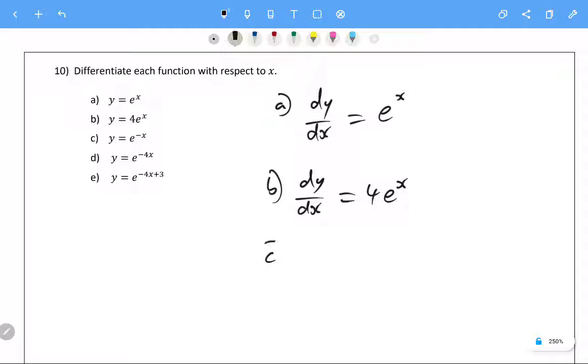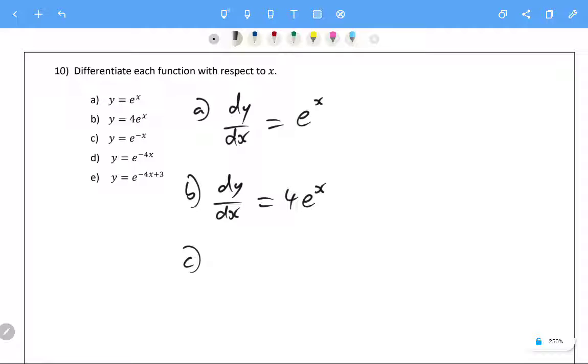Alrighty, c is a chain rule question. The reason it's a chain rule is that we're not actually deriving e to the x, we're actually deriving e to the negative x. The derivative of e to the negative x is e to the negative x, but we have to multiply by the derivative of the inner function. e to the x is the outer function, negative x is the inner function. So what's the derivative of negative x? It's negative one. So the derivative in this case would be negative e to the negative x.